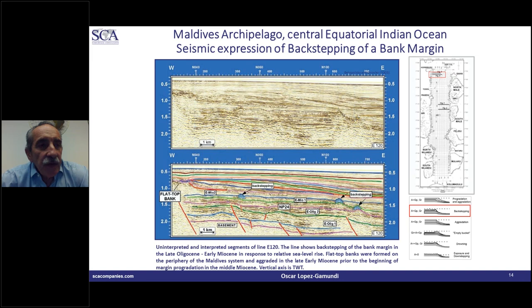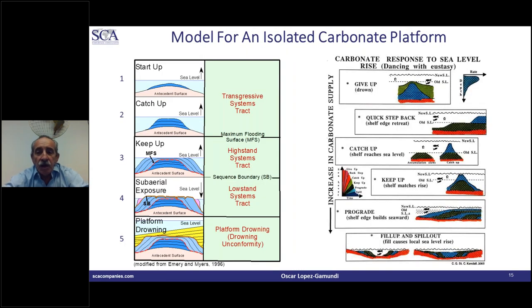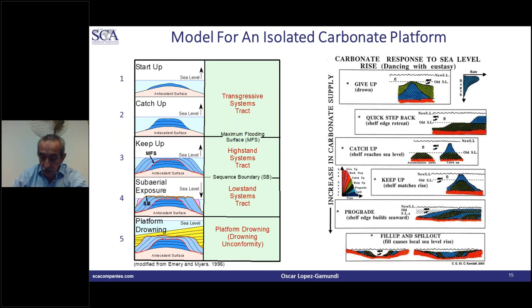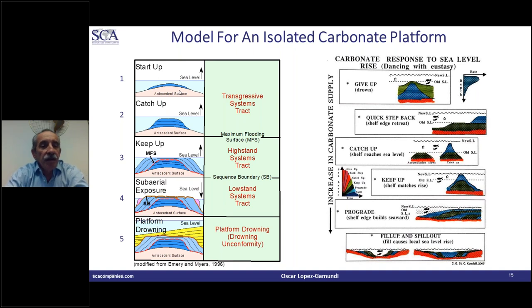What is happening here is that the rate of sea level rise is so fast that the photic zone cannot keep up in the same place and moves to a shallower area. This is a good introduction to a general sequence stratigraphic model that repeats itself for all isolated carbonate platforms. On the left you see a classic model starting with stage one — 'start up' — where you have the antecedent surface or high. That high just needs to be within the photic zone; as long as water depth is within the photic zone and there is no clastic input, we will have enough bioproductivity and development of these buildups.